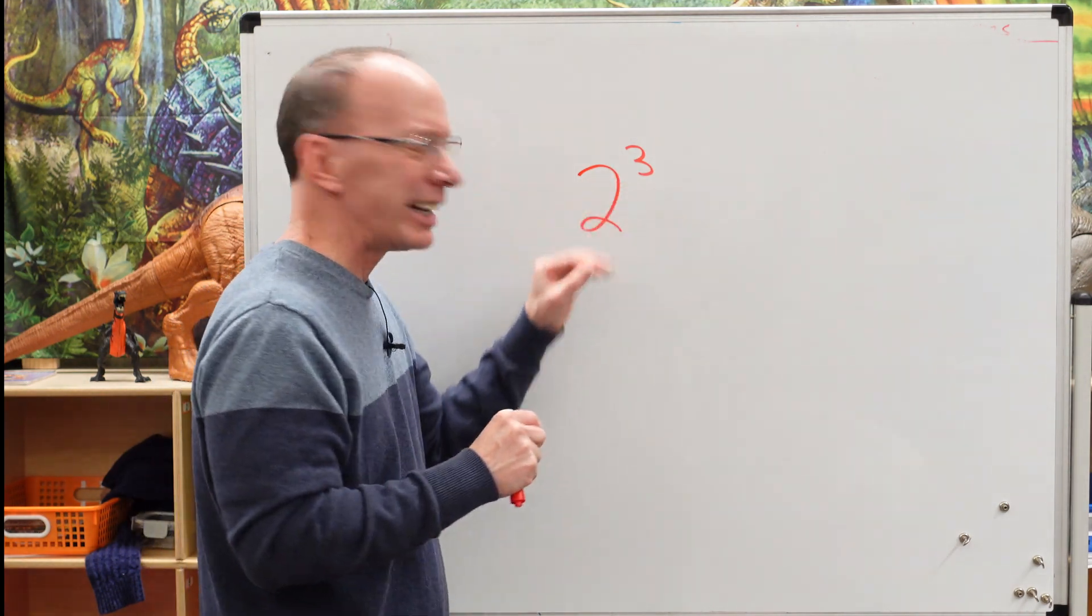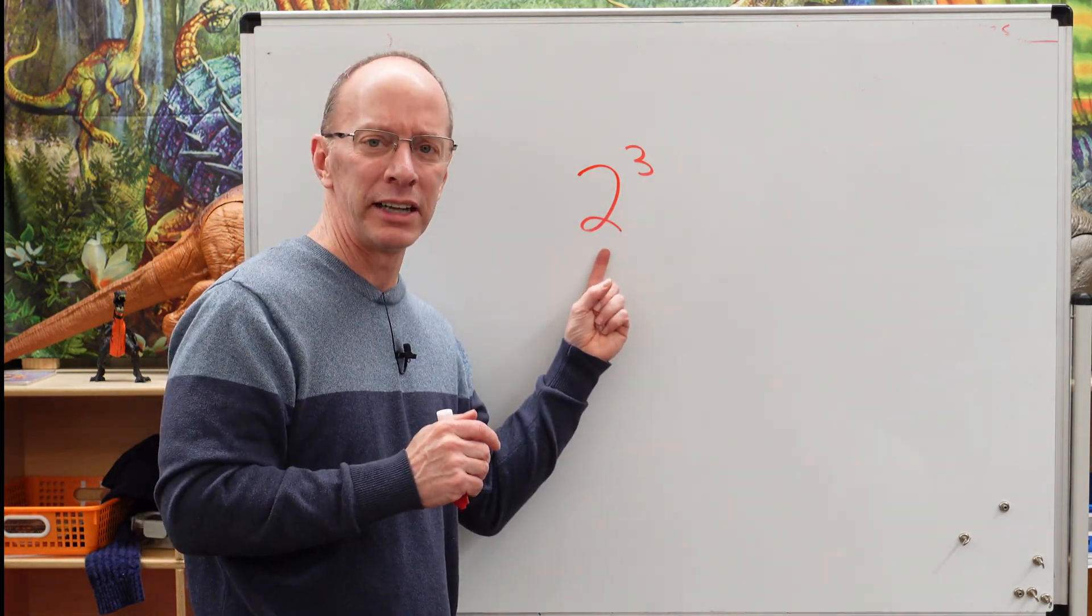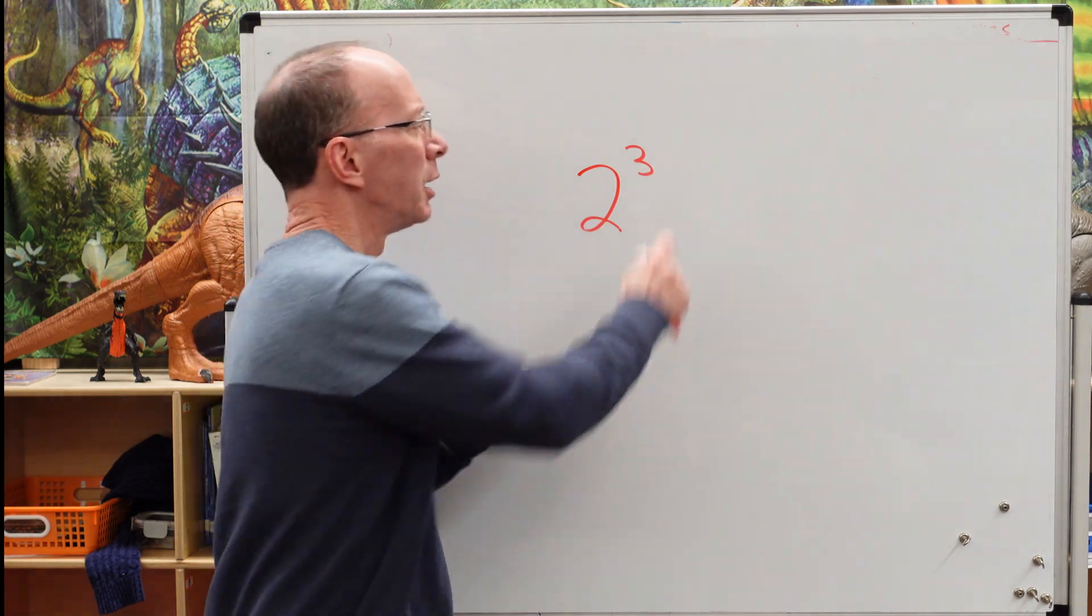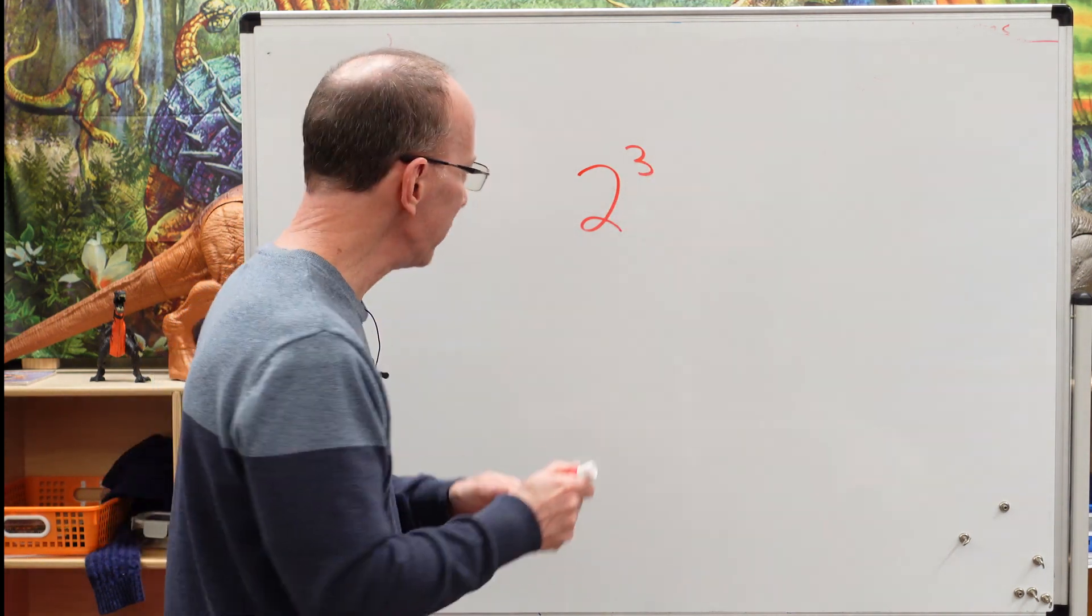Now when you look at that, it is not two times three. What you're going to do is you're going to take the base number and you're going to multiply it by how many times the exponent is. All right, ready to try it? Okay,